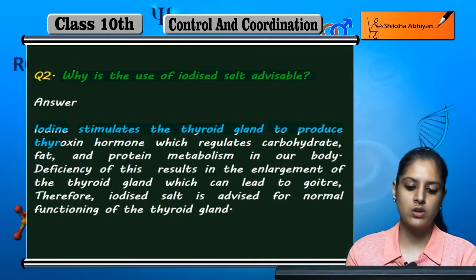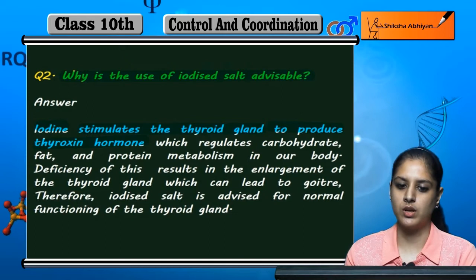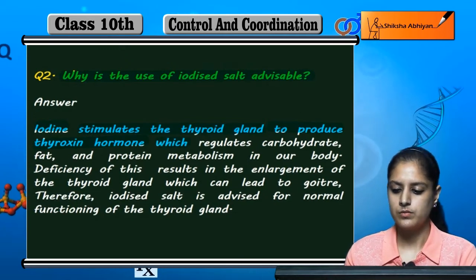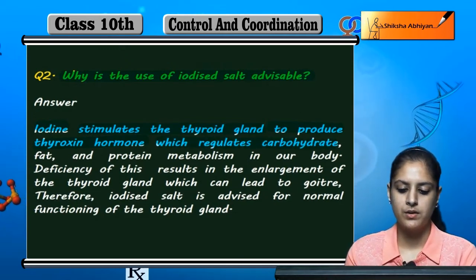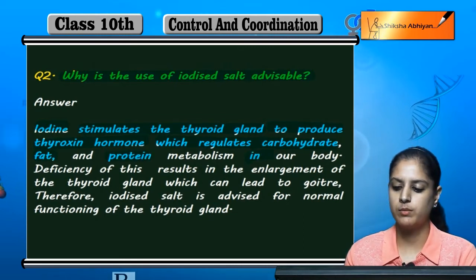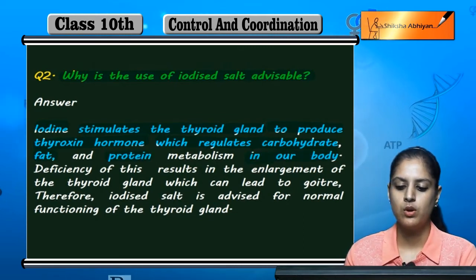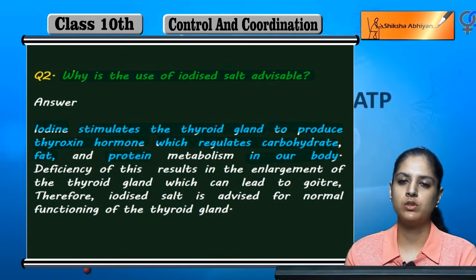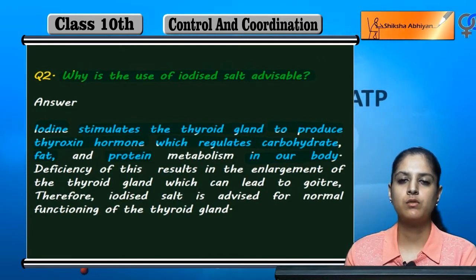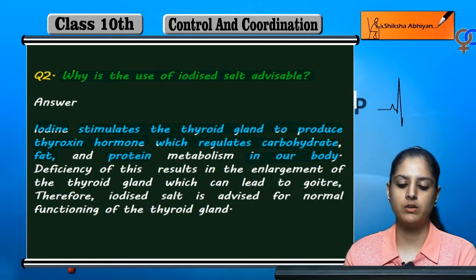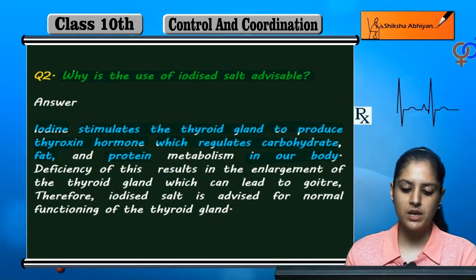Because of this stimulation, thyroxin hormone is produced. Thyroxin hormone regulates the metabolism of carbohydrates, fats, and proteins in the body. If thyroxin is secreted properly, the metabolism of carbohydrates, fats, and proteins will occur correctly.